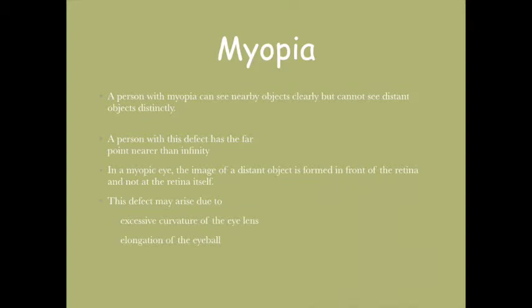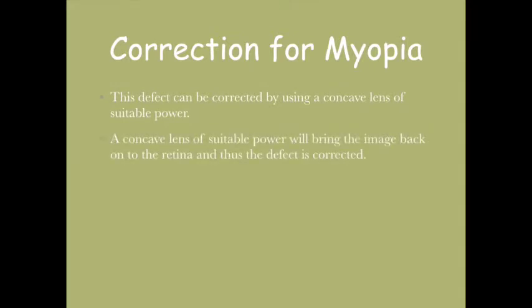For a patient suffering with myopia, correction can be done with the help of a concave lens. By placing a concave lens in front of the eye, the defect is corrected.